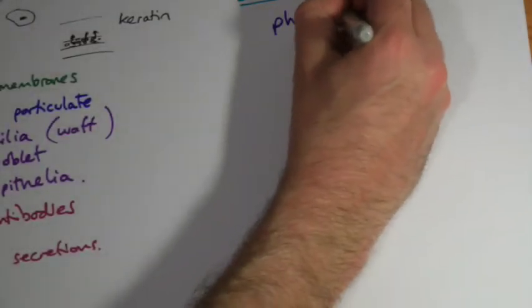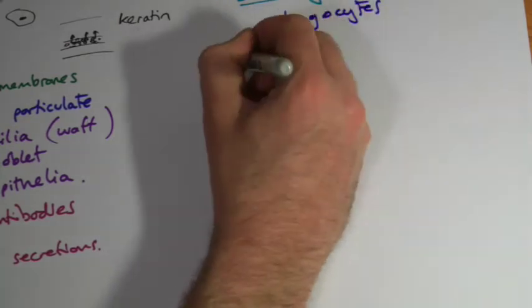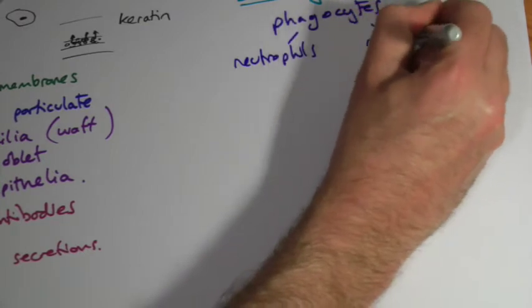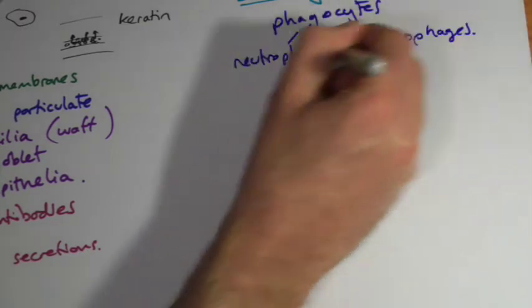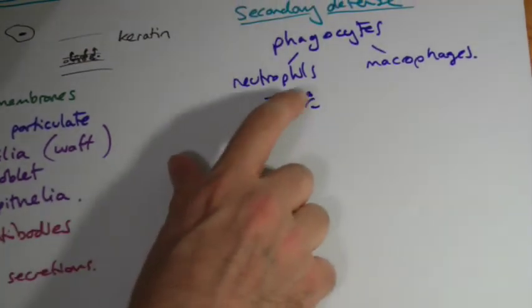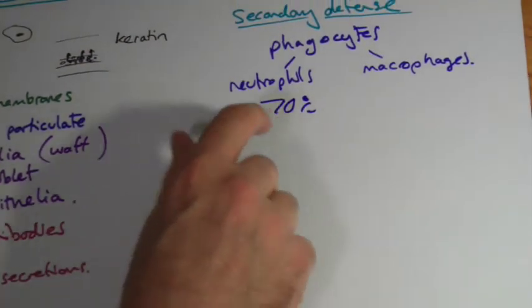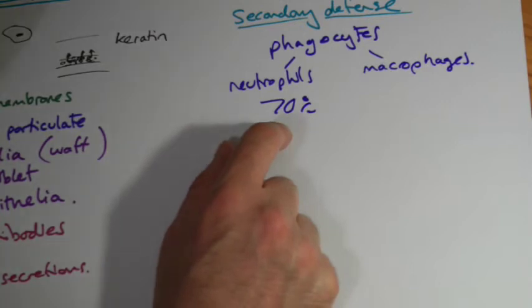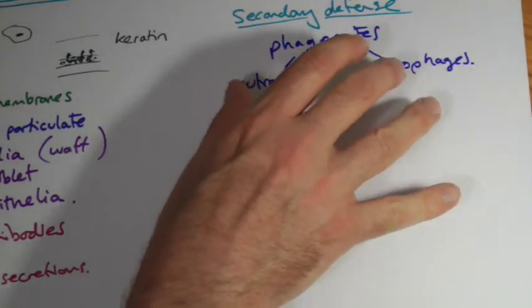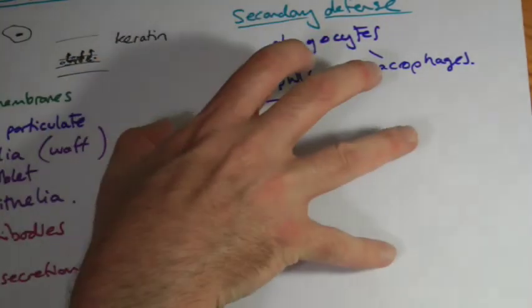These are the phagocytes, of which there are two types: neutrophils and macrophages. Neutrophils are the most common. It's about 70% of all your white blood cells are neutrophils. These are the ones that you tend to see in pus. They don't live for very long, but they do a fantastic job.